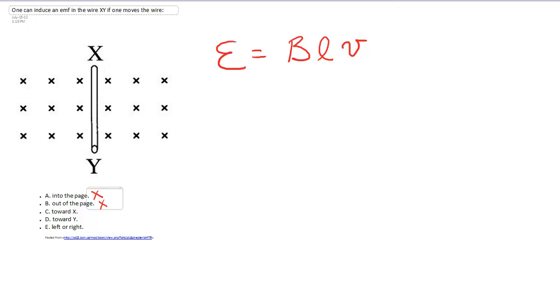Now what about C and D? C says if I move it towards X, so straight up, or D says towards Y, straight down. Now if this was an infinitely thin rod, there would be no induced EMF in those directions, but there is a tiny thickness to it. And that little span, that little thickness, the diameter of that pipe is the length over which those charges will separate.